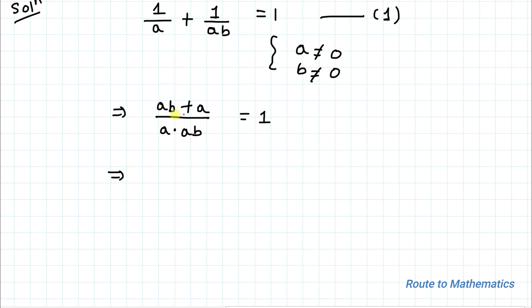Now this implies, taking a common, we have a multiplied with (b+1) divided by a multiplied with ab. So these two a get cancelled out equals to 1. Now by cross multiplication we have b+1 equals to 1 divided by... no, (b+1)/b equals to... b+1 equals to ab.